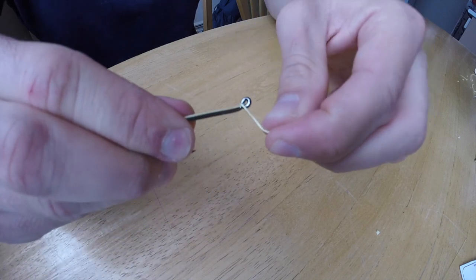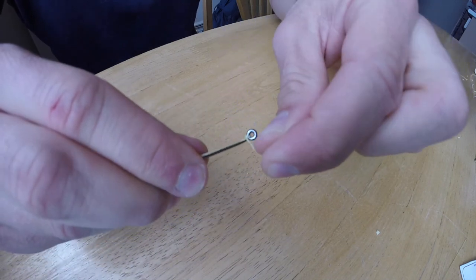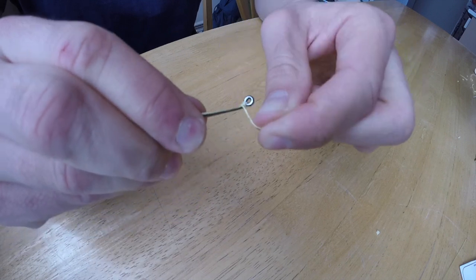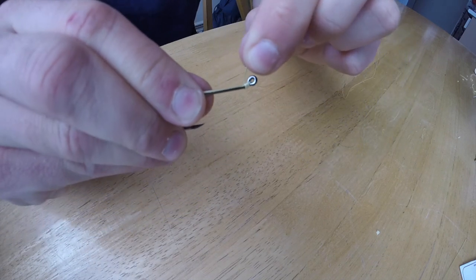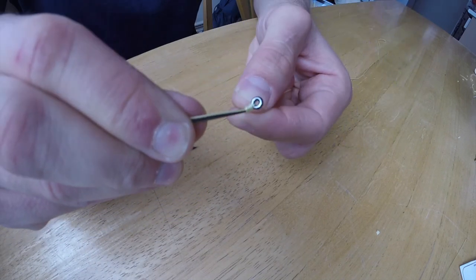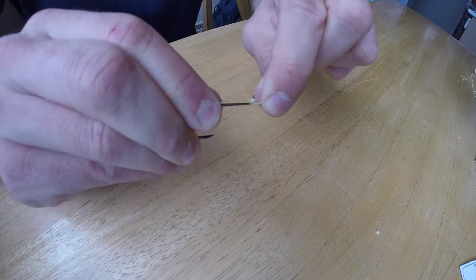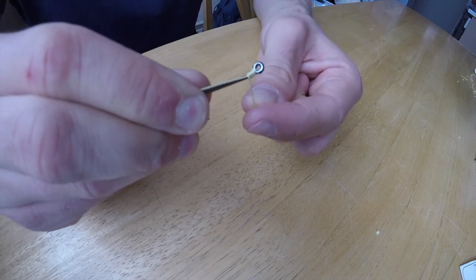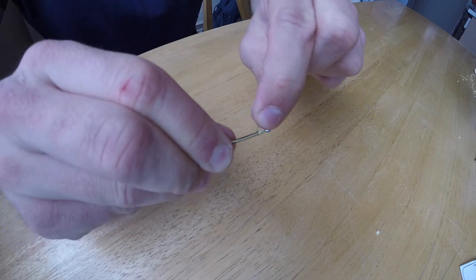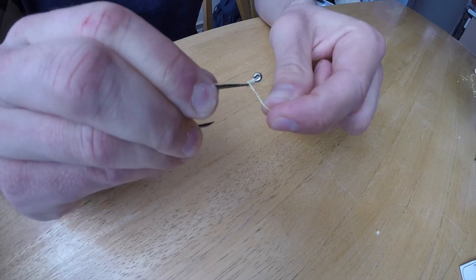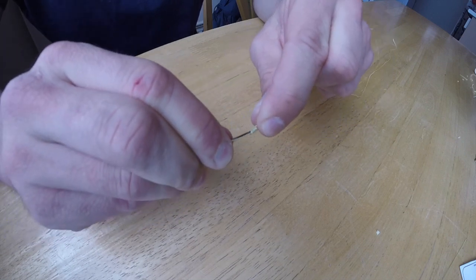Then you wrap your leader around your tag end and the hook. Depending on the size of your leader, I'll do it between five or six to nine times. The thinner the leader, the higher the amount of wrapping.